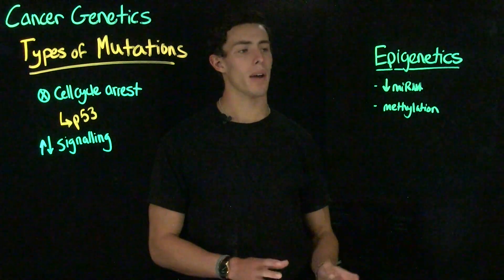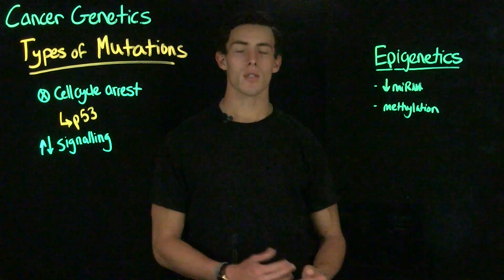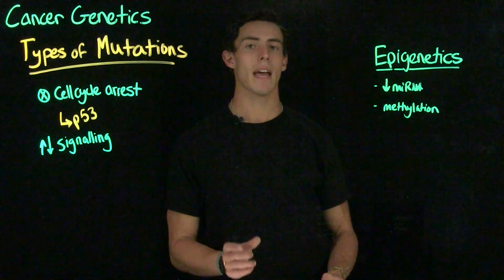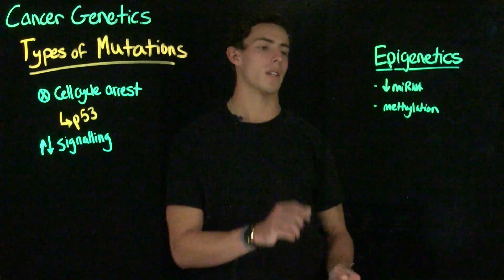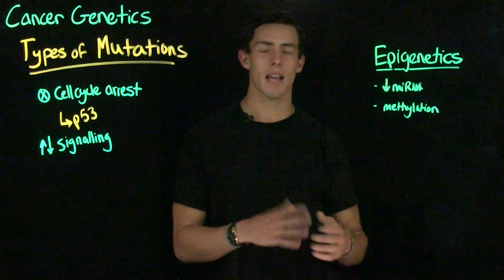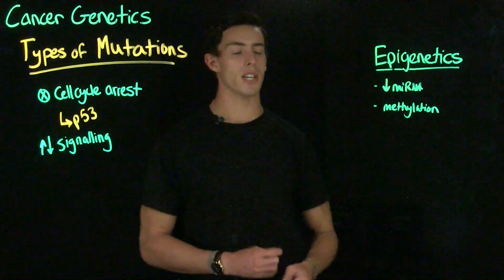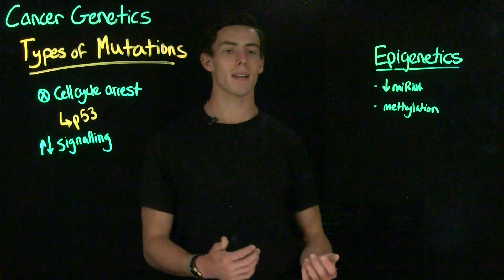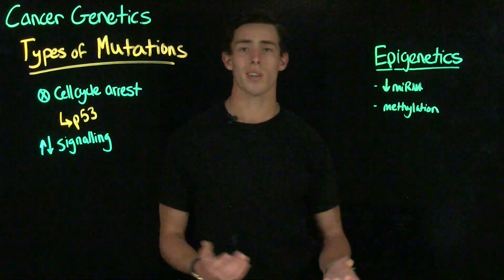Regarding epigenetics: miRNA is often used to regulate transcription, and it's no coincidence that people with cancer generally have lower levels of miRNA, which would otherwise be regulating tumor-causing oncogenes. Another factor is methylation — if a person doesn't have a mutant allele at a given locus for a tumor suppressing gene, but the promoters of both loci are methylated, they lose the ability to regulate the cell cycle and control proliferation, which can cause cancer.